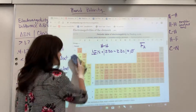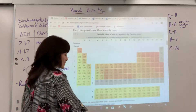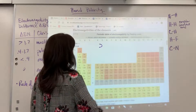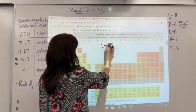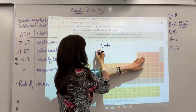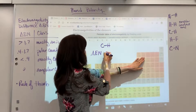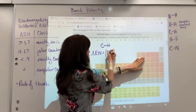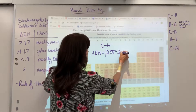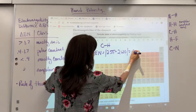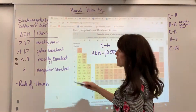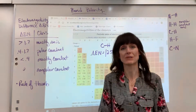Carbon-hydrogen bond: this is the backbone of life. The electronegativity difference is 2.55 minus 2.20 = 0.35. Since 0.35 is less than 0.4, it's classified as mostly covalent.